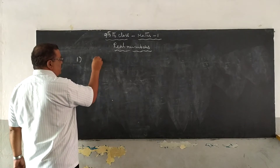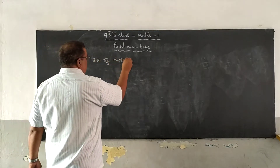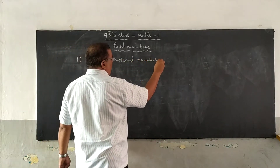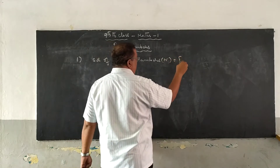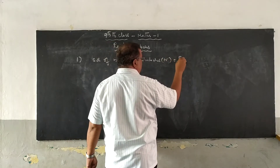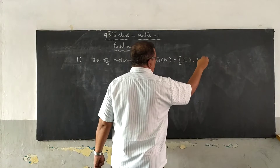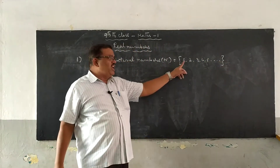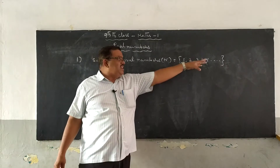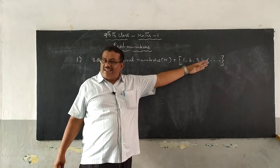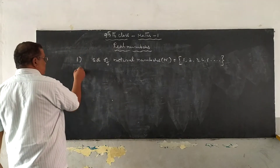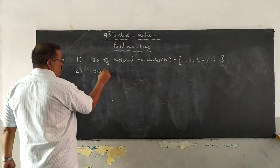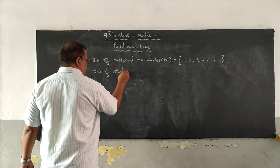The first one is the set of natural numbers. What are natural numbers? These numbers are also called counting numbers. These are 1, 2, 3, 4, 5, and so on. For us, the least natural number exists, but the last natural number does not exist. For the set of whole numbers, when we add one more digit, that is 0, we get the set of whole numbers.